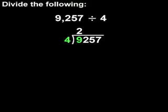Next, multiply 2 times the 4 outside the division symbol to get 8, and put 8 under 9. Then subtract 9 minus 8 to get 1.